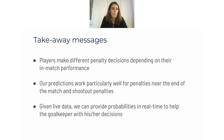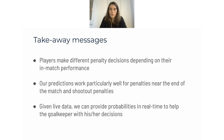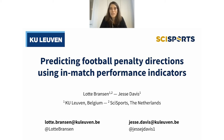To conclude: players make different penalty decisions depending on their in-match performance — that was the research question. Players who play well aim more often for the natural corner. Our predictions work particularly well for penalties near the end of the match and shootout penalties, but they can be improved at the start of the match. Given live data, we can provide these predictions in real time to help the goalkeeper with their decisions, as shown with the Miedema example. Thanks for listening and I have some time for questions.